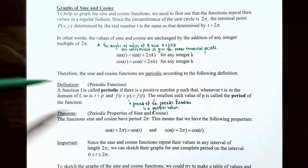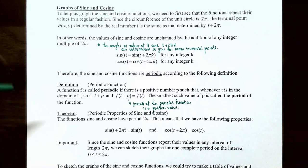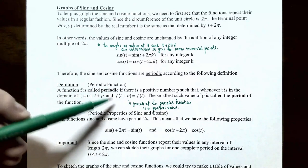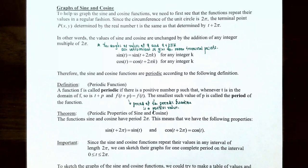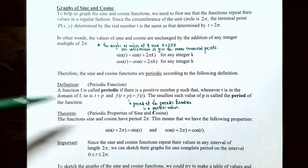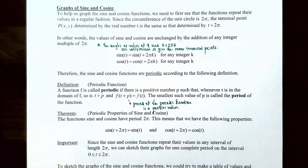This means sine and cosine are periodic. A function f is called periodic if there is a positive number p such that whenever t and t + p are both in the domain, f(t + p) = f(t). The smallest such p is called the period of the function. The theorem on periodic properties states that sine and cosine have a period of 2π — the smallest positive number before they start repeating values.